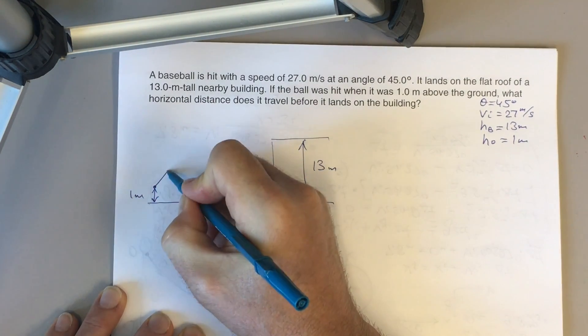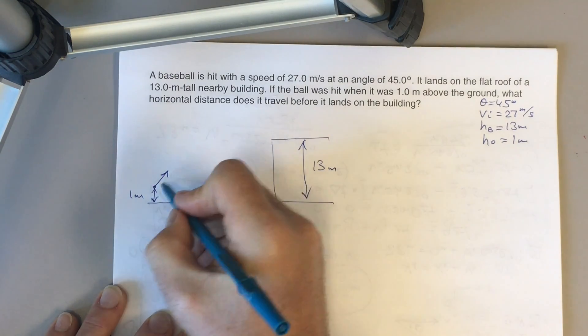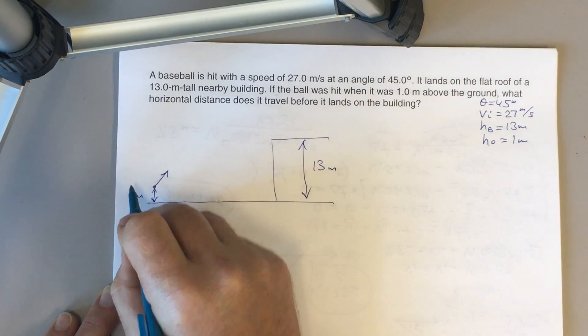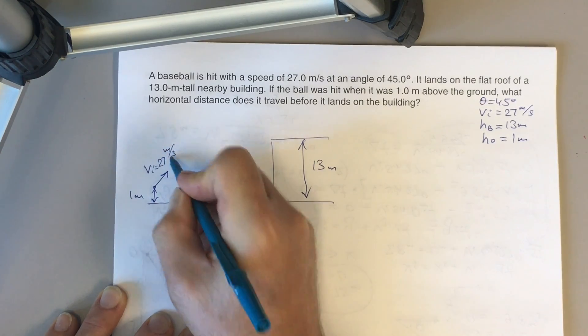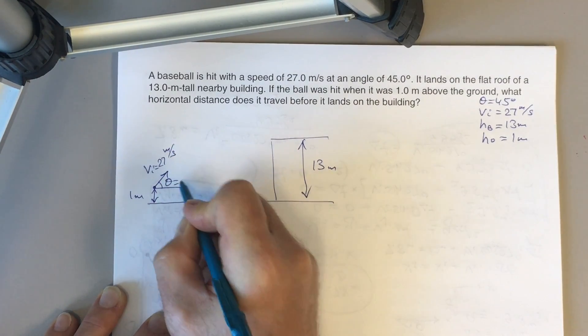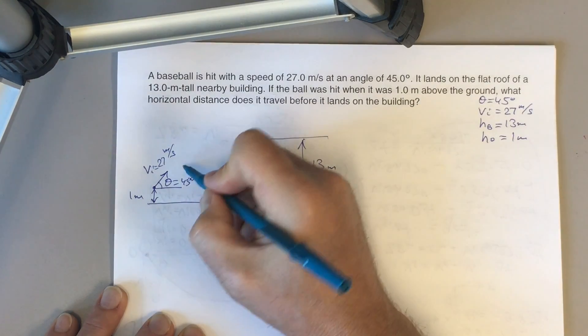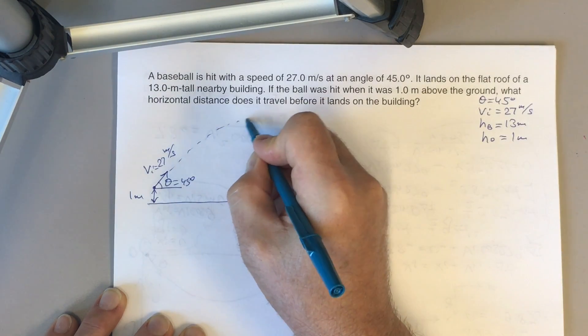And you send this ball with a velocity equal to 27 meters per second at angle theta equals 45 degrees with respect to horizontal. The ball will move over the parabola.